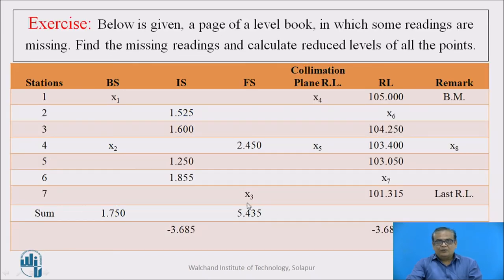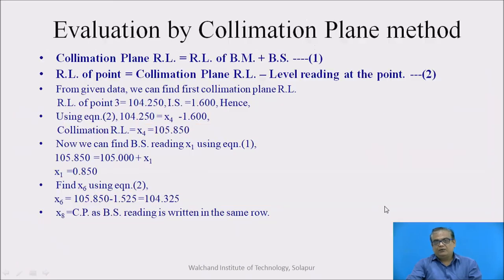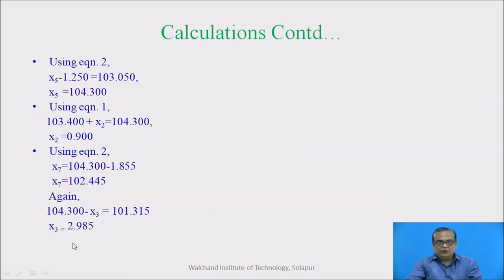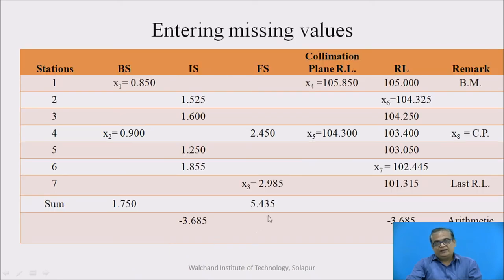Now which is the next unknown value? Unknown value is x3 now, foresight reading, the last reading. And we know the RL of that last station, station number 7. We know the collimation plane RL. One can easily find this particular value also. So collimation plane RL minus x3 is equal to 101.315. This is collimation plane RL minus x3 is equal to RL of that station. So x3 is 2.985, write down here x3, 2.985. So we have found in such a fashion all the unknown values.